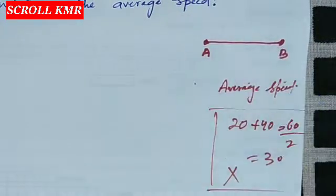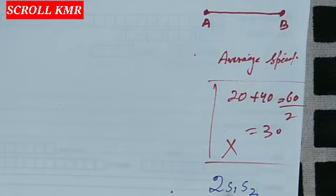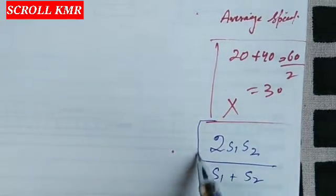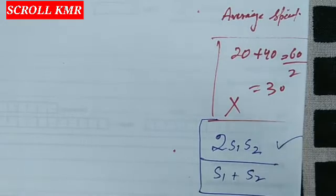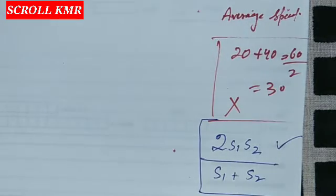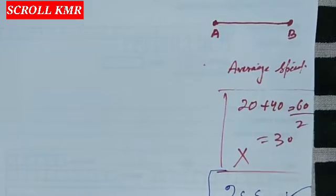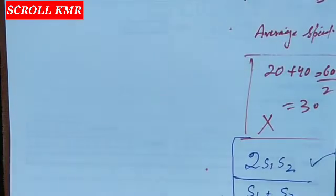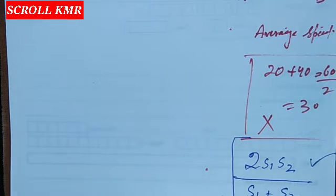یعنی B سے A تک speed۔ That is: 2 into 20 into 40 divided by 20 plus 40۔ یہاں پہ formula apply ہوتی ہے اور اس formula سے question ٹھیک ہو جائے گا۔ لیکن میں آپ کو صرف یہ نہیں بتاؤں گا کہ formula apply کرو۔ ہم اسے derive کریں گے۔ اگر آپ YouTube پر باقی videos دیکھو تو وہ directly formula دیتے ہیں، لیکن میں آپ کو یہاں formula derive کر کے دکھاؤں گا۔